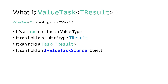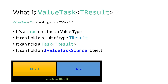If we take a look at the ValueTask structure, it has two fields: one of type TResult, and one of type object. That object field is going to hold either a Task or an IValueTaskSource. Most of the time that object field is going to be null.